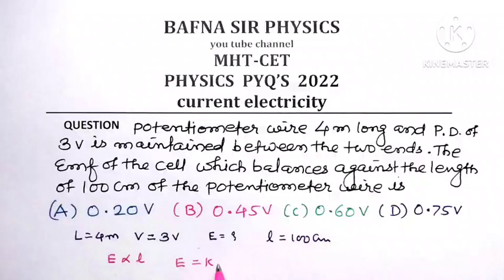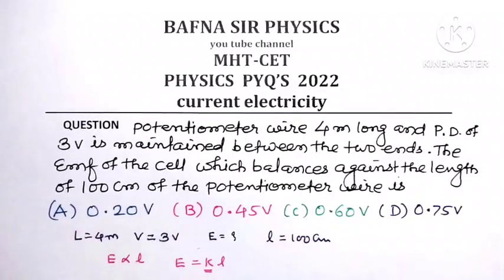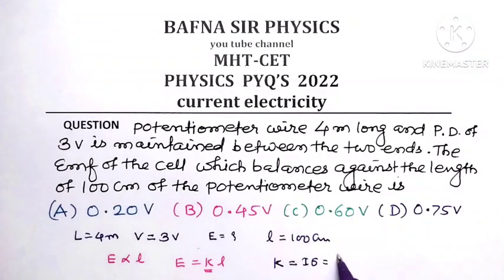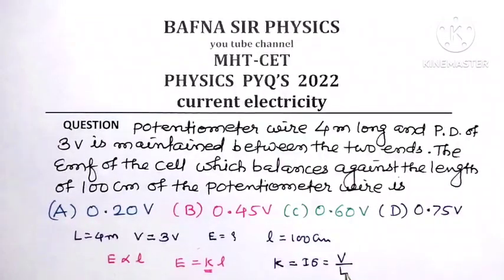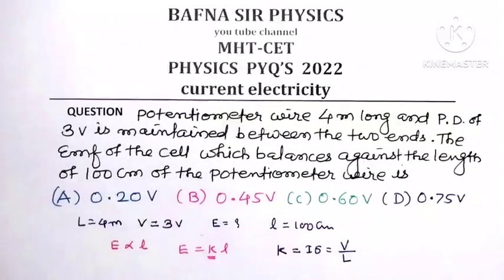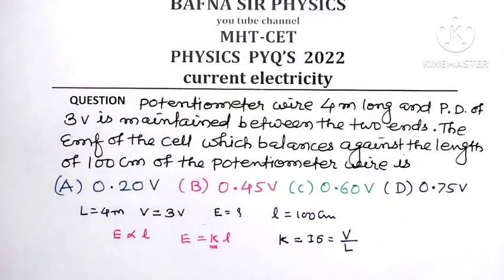equal to K into L, where K is the potential gradient of the potentiometer wire. Potential gradient K is given either as I into sigma or V divided by L, the fall of potential per unit length of wire.